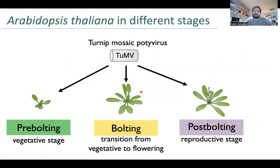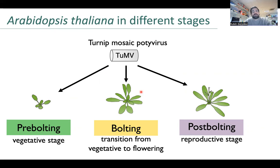In this work, we have studied the Turnip mosaic potyvirus. We have used two strains of this virus: one that is naive to Arabidopsis and another one that has been previously adapted to Arabidopsis.